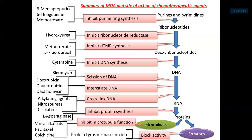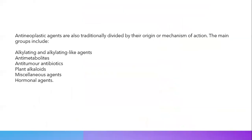L-asparaginase inhibits protein synthesis. Vinca alkaloids, paclitaxel, and colchicine inhibit microtubule function — microtubules being important for cell division. Protein tyrosine kinase inhibitors block the activity of enzymes involved in cell signaling. Antineoplastic agents are traditionally divided by their origin or mechanism of action.